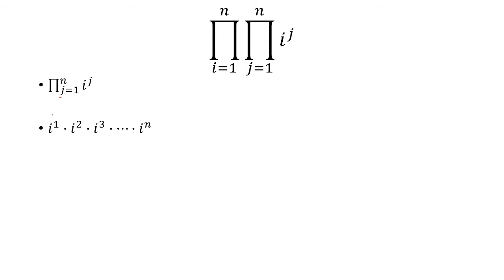So plugging in j equals 1, we get i to the first power. j equals 2 is i squared, all the way up to j equals n, which is i to the nth power. And here, because it's a product, we have to multiply each of these.